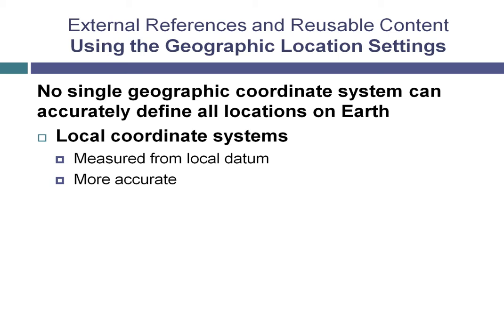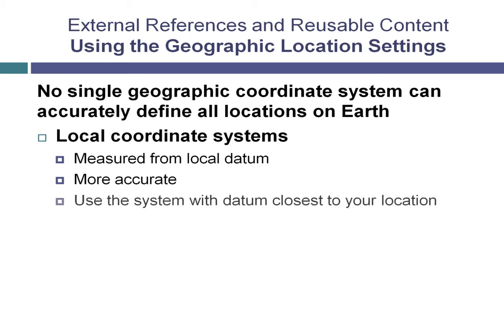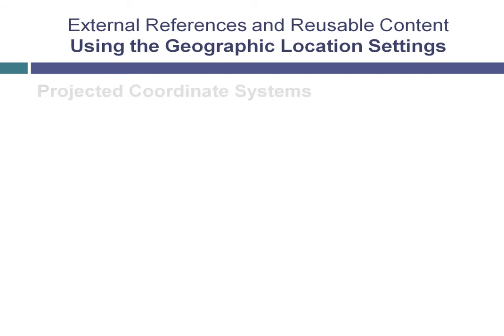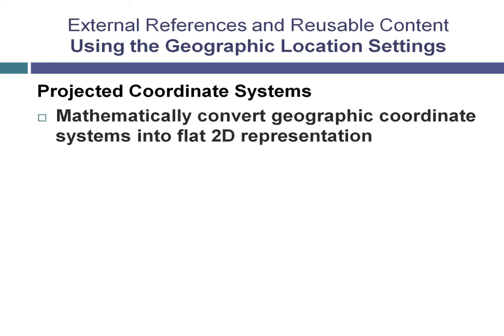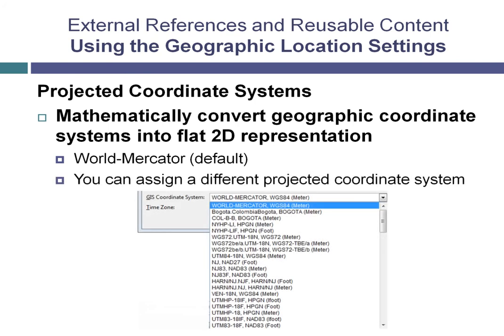There may often be more than one coordinate system that covers the area in which you are working. Generally, the coordinate system whose datum is closest to your location is considered to be the most accurate. Projected coordinate systems use a mathematical transformation to convert geographic coordinate systems into a flat, two-dimensional representation. When you assign geographic location information to a drawing, you also assign a projected coordinate system to the drawing. By default, the program uses the World Mercator system, but you can assign a different projected coordinate system to the drawing file.